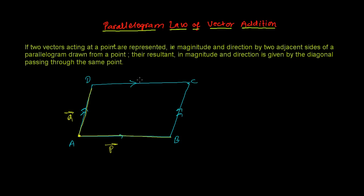Their resultant in magnitude and direction is given by the diagonal passing through the same point. So the resultant of vector P and vector Q will be given by the diagonal passing through the same point — the point where these two vectors are acting. That means this diagonal here.